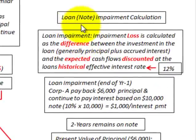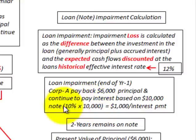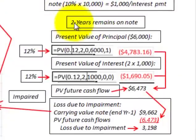Now let's do our loan impairment calculation. The loan impairment loss is calculated as the difference between the investment in the loan — generally the principal plus accrued interest — and the expected cash flows discounted at the loan's historical effective interest rate, which in this case is 12%. At the end of year one, Corporation A is going to pay back the $6,000 principal and continue to pay interest based on the $10,000 note at the 10% stated rate, giving us $1,000 interest payments per year. There are two years remaining on this note.